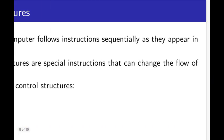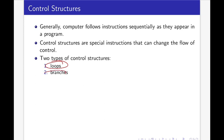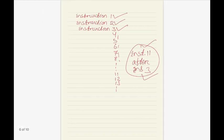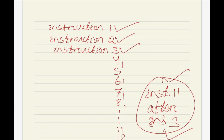Basically there are two basic types of control structure: one is loop, another one is branch. Loops allow you to repeat a sequence of instructions multiple times. For example, suppose we want to execute instruction 3 multiple times instead of once — for this we can use loop, and the details of loop will be discussed later.